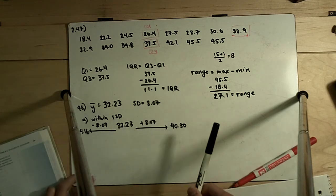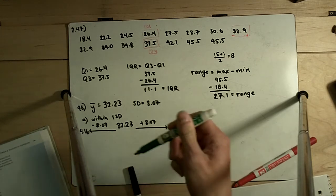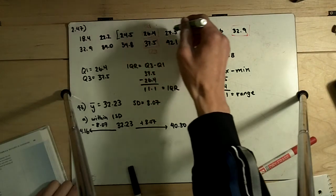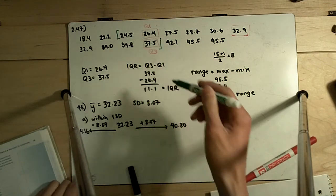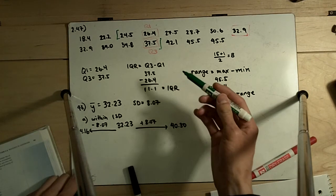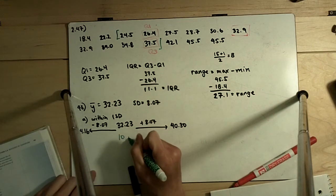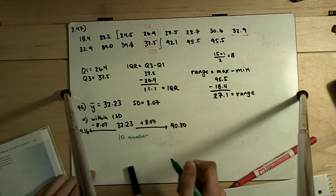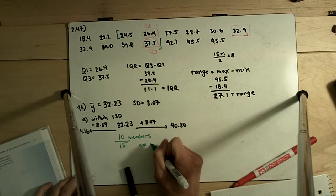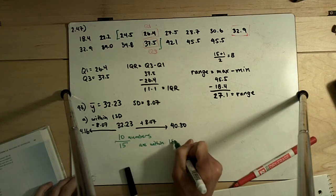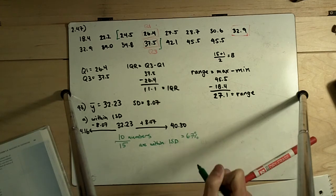Looking at our original numbers between 24.16 and 40.30, everything in these green brackets is included within one standard deviation. Counting those up, we get 10 numbers. So 10 out of 15 total numbers are within one standard deviation, which is 67%.